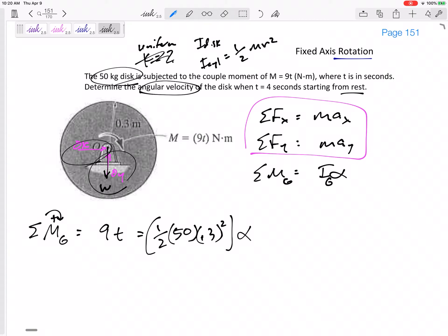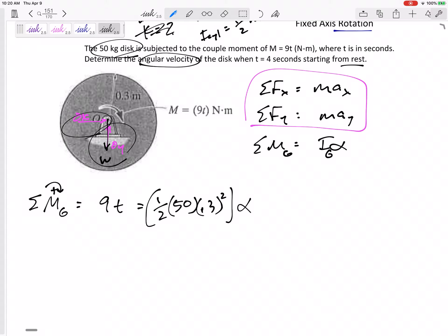Let me just divide this over. I would get alpha is 4t. Okay, I can handle that. They gave me the most roundabout way to tell me the angular acceleration of this disk is 4t. What is the angular velocity after four seconds? We've done these problems before, right?